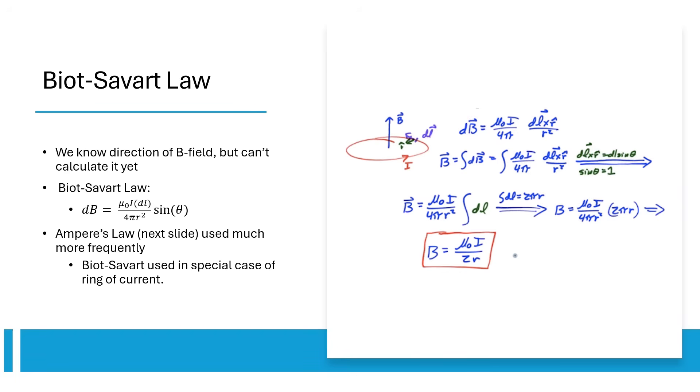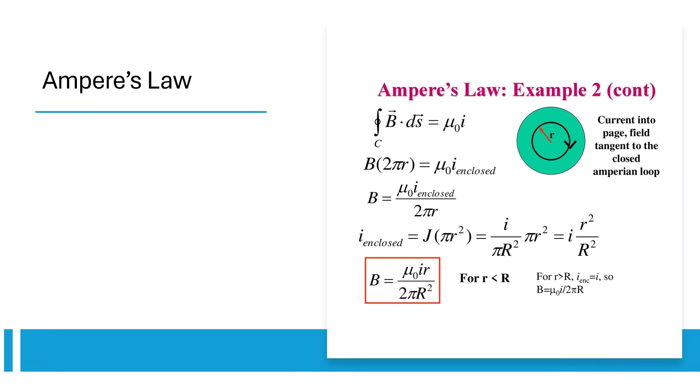You don't have to use Biot-Savart's law very often though, because we have a second, much easier law, Ampere's law. Ampere's law is similar to Gauss's law in that you have to draw a shape, in this case an Ampereian loop that encloses 2D current. The integral of B-field along the loop equals mu-naught times current.